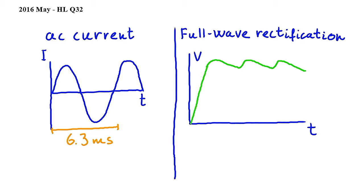Now peaks and troughs on the AC current graph correspond to the peaks on the full-wave rectification potential difference time graph. So this peak corresponds to this peak, and this trough corresponds to this peak.